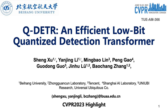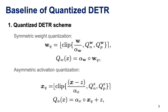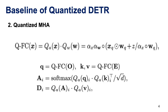Hello, I am honored to report QDDR, an efficient low-bit quantized detection transformer. Current DETR variants face an application constraint of huge FLOPs; for example, DETR-huge gains 162 gigabyte FLOPs, making it very challenging to deploy on real-world devices. We construct a baseline quantized DETR network using the learned step size quantization method. Specifically, we use symmetric quantization for network weights and asymmetric activation quantization with zero point for activations, including the query, key, value, and activation map. Based on the quantization method above, we formulate the quantized fully connected layer as QFC.